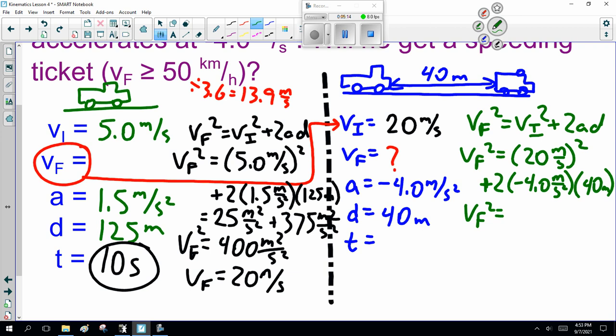Now, I'm going to stop there. V_F² = V_i² + 2ad. V_F² is, I don't know, but V_i is 20. 20 times 20 is 400. Now, 2 times 4 is -8. -8 times 40, -320.